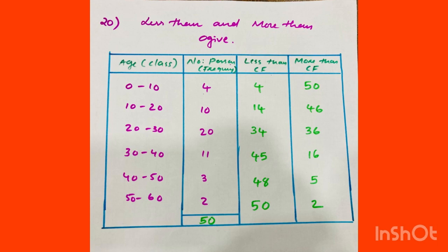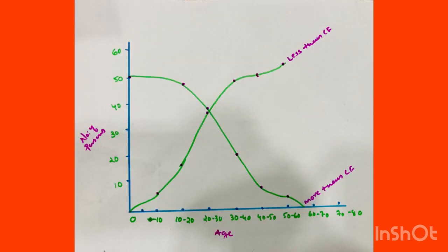More than cumulative frequency — you can do that in our table, which is complete. The class intervals are: 0 to 10, 10 to 20, 20 to 30, 30 to 40, 40 to 50, 50 to 60.